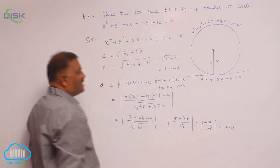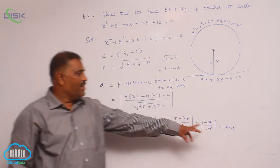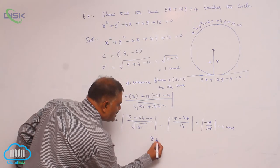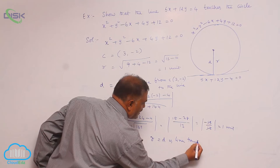So you can see very clearly that radius is 1 unit, perpendicular distance is also 1 unit. So r is equal to d implies line touches the circle.